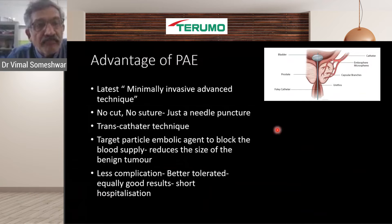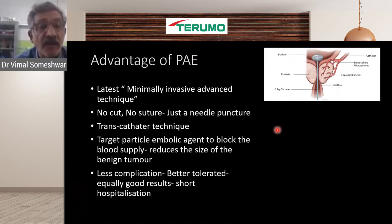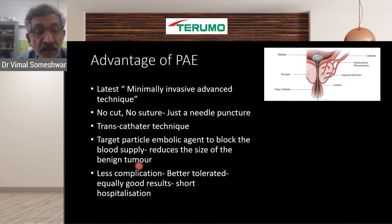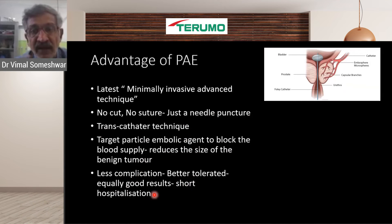Being a trans-arterial approach, PAE is minimally invasive and done under local anesthesia. We puncture the radial or femoral artery — there is no need for any cut or suture, just a needle puncture. A catheter is introduced all the way into the prostatic artery, and embolic agents are injected to block the blood supply, reducing the size of the benign tumor. PAE is better tolerated by patients, results are equally good, and hospitalization is short. It is very important to make patients aware of this therapy.